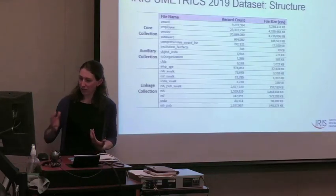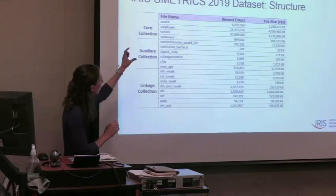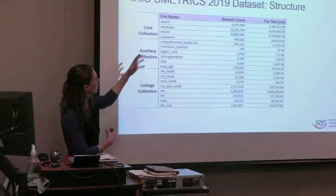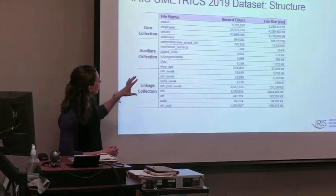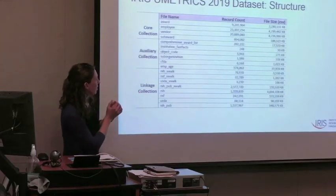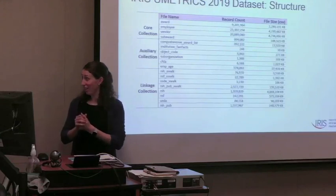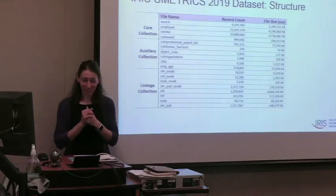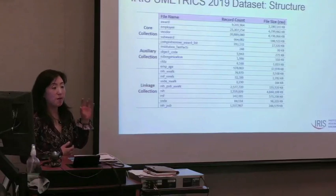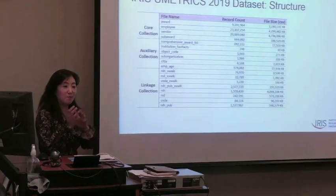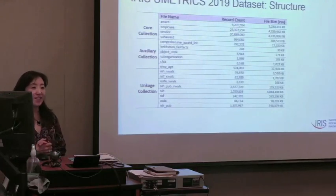Before I pass this off to Natsuko: the dataset itself is talked about in collections. Our core collection is basically the files coming directly from member universities — these are transaction-level data files. Everything else is stuff built at IRIS to add meaning to those files. As you can see, each file varies in number of records — the employee records file has about 23 million records. For comparison, that's not even comparable to small datasets I used to deal with as a grad student. Researchers have to deal with that variety, and the interest of researchers wanting time-series or cross-sectional work is sometimes constrained by what data you actually have.